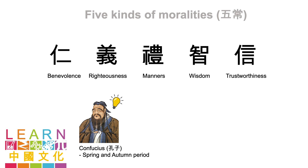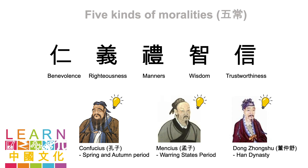Later on, another two Confucian philosophers, Mencius and Dong Zhongshu, continued to develop the idea into the current five moralities. Now let me briefly explain to you each morality one by one.